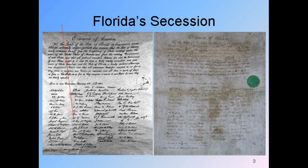Florida seceded on January 10th, 1861 — we were the third state to secede from the Union, after South Carolina and Mississippi. Florida was the newest state in the Union in the South, having become a state in 1845. We were the least populated state in the Confederacy, but we did secede third out of all the states.